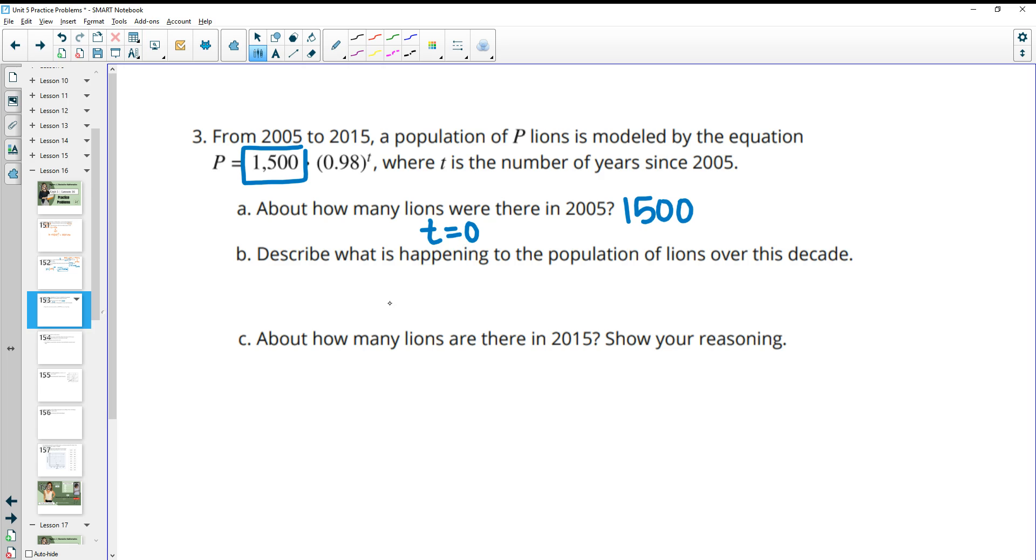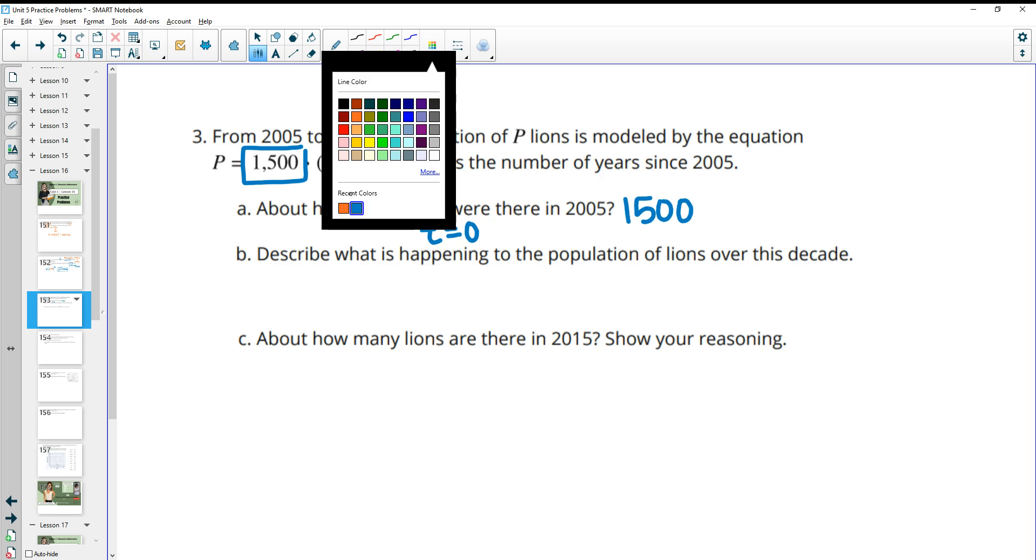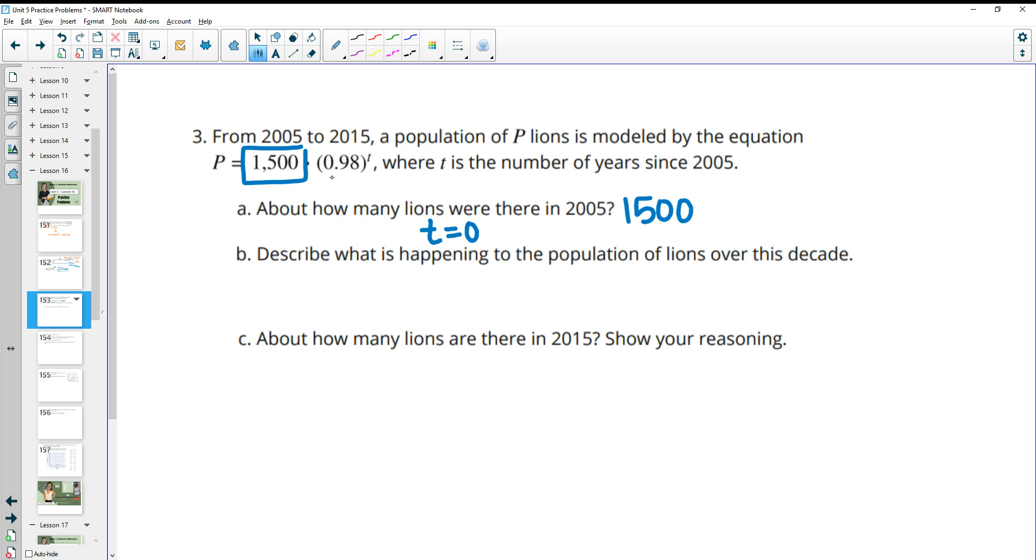Then it says describe what's happening to the lions over this decade. We know from looking at this growth factor, that 0.98 is less than 1, so we know that the population is decreasing. If we wanted to go even further and say what percent it's decreasing by, you can take the growth factor minus 1, and then you'd get negative 0.02. That negative means it's decreasing.